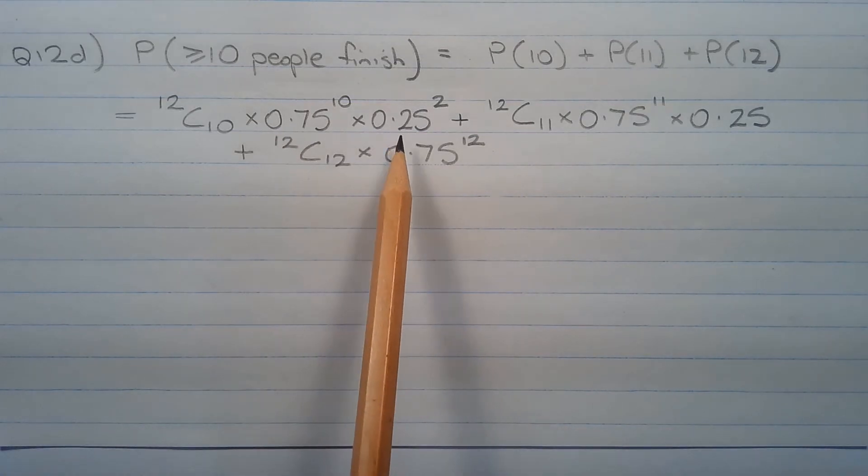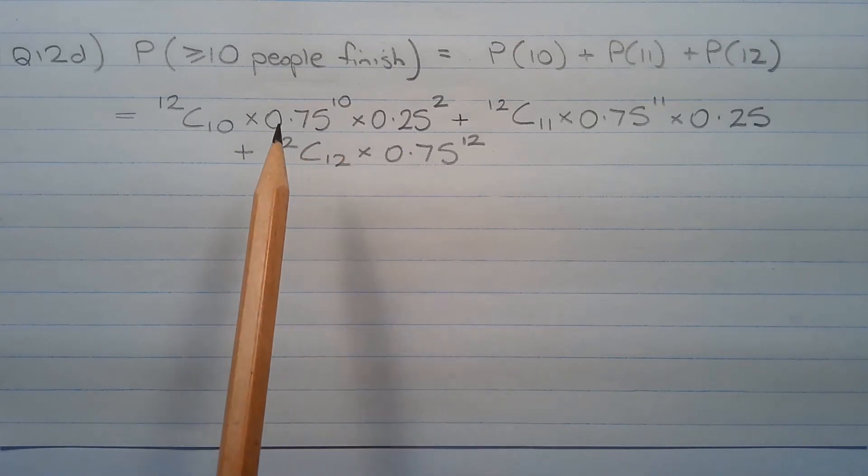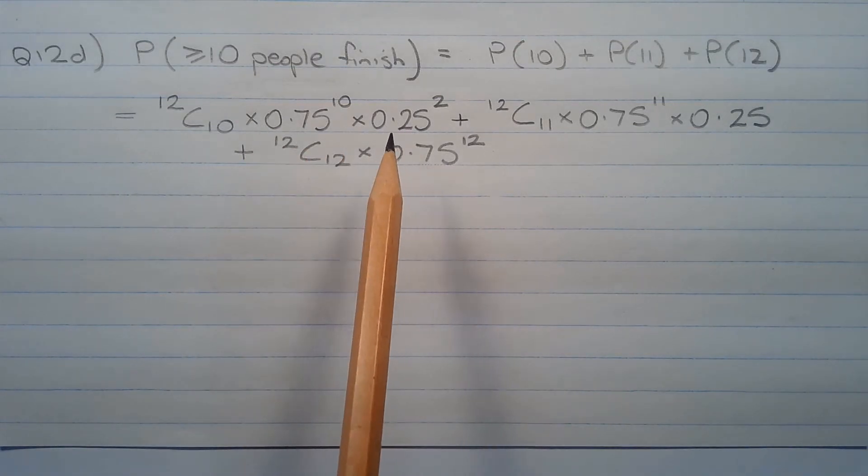Where 0.75 represents the probability that a person finishes the trek within 8 hours, and 0.25, which is the complement of 0.75, represents the probability that a person does not finish the trek within 8 hours.